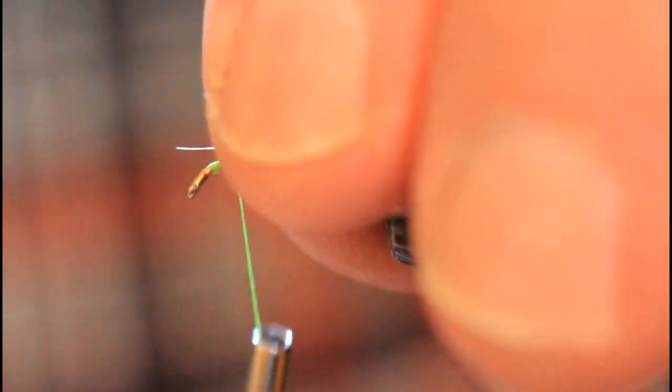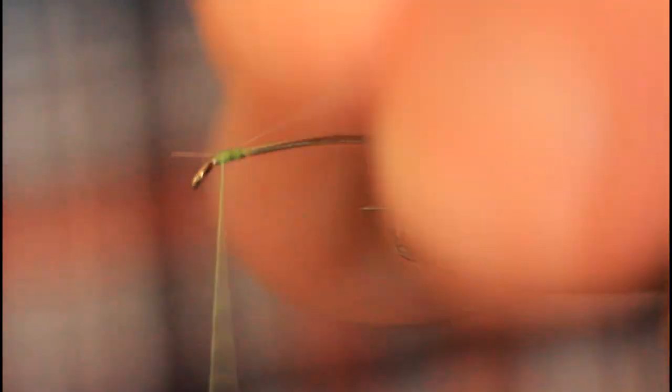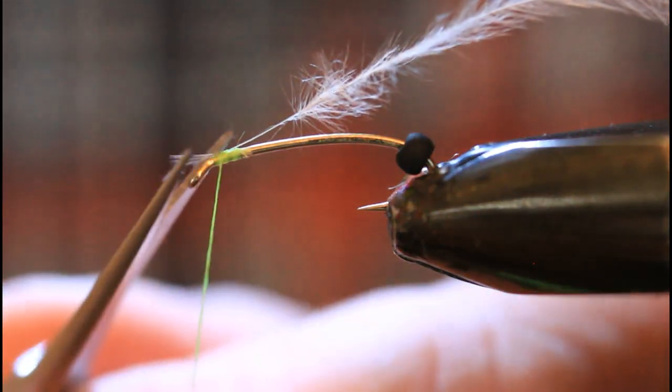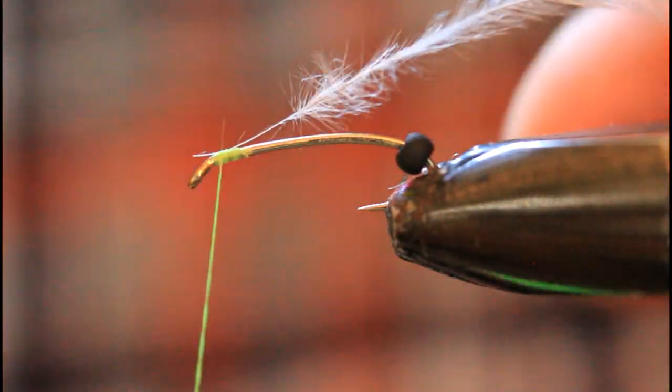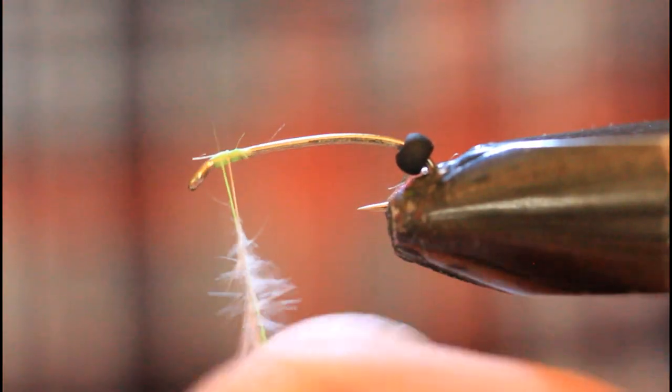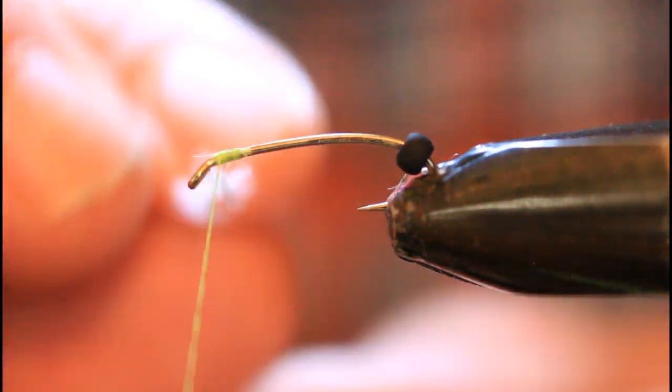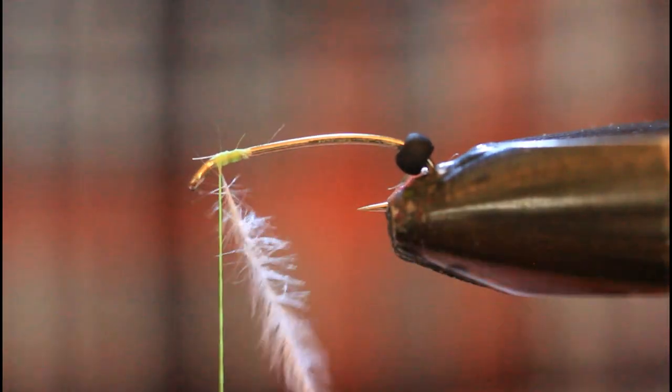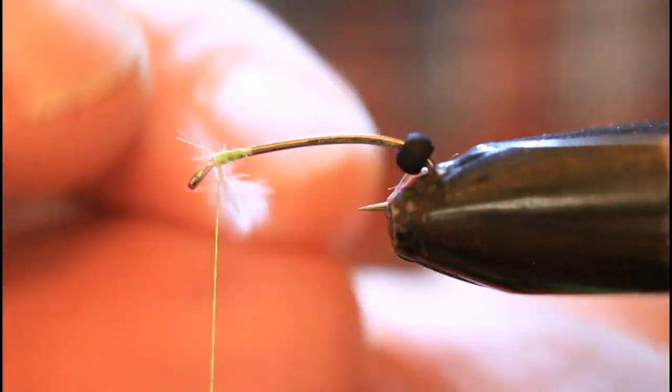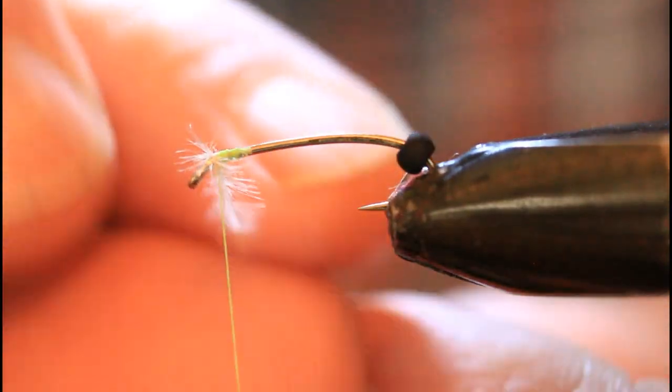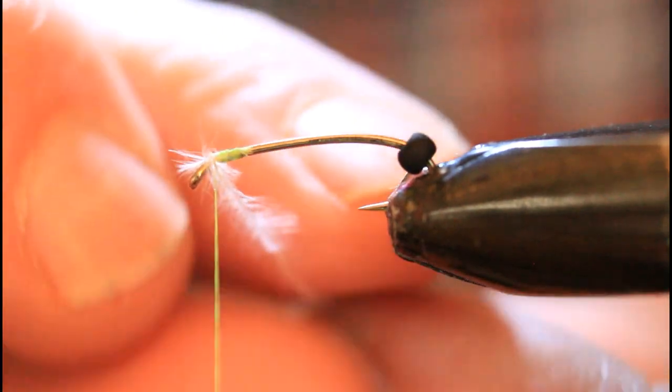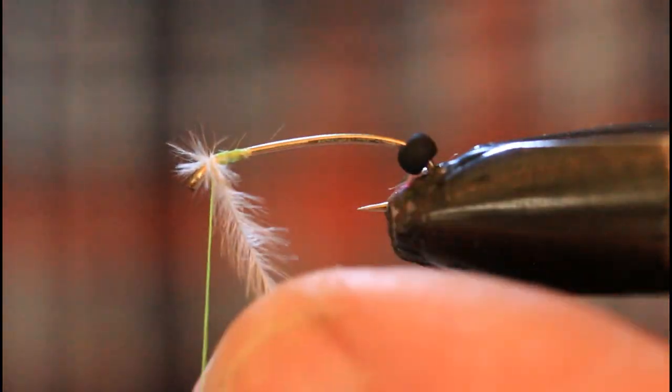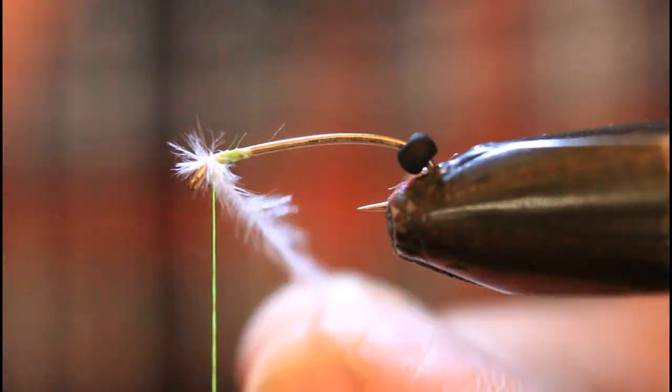There we go. We'll bring it up for the tie-in point. We'll do the pinch and loop method there. A couple of wraps. Cut off the tag end. And then we'll give it about three or four wraps here once we get to the actual fibers of the ostrich hurl. So that's one, two, three, four. I like it a bit on the bushier side. So I think I'm going to give an extra one.